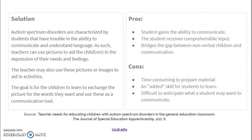Another solution is that autism spectrum disorders are characterized by students who have trouble with the ability to communicate and understand language. As such, teachers can use pictures to aid children in the expression of their needs and feelings. The teacher may also use these pictures or images to aid in activities. The goal is for children to learn to exchange the picture for the words they want to use and use them as a communication tool. The pros are that the student gains the ability to communicate, receives comprehensible input, and it bridges the gap between nonverbal children and communication.